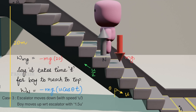Suppose it takes time t for the boy to reach the top. The work done by the normal reaction equals -mg × u cosθ × t. The normal reaction force points upward, but as the step is moving downward, the point of contact moves downward with speed u. So the power supplied by the normal reaction is N × u cosθ, and total work done is power multiplied by time.